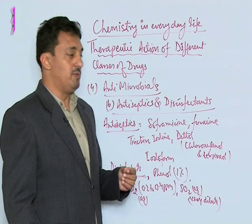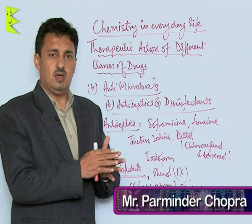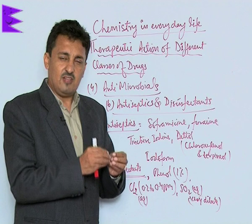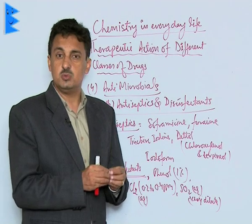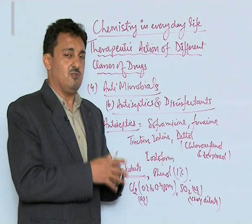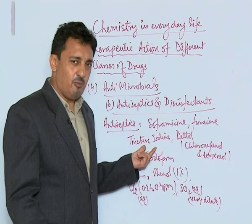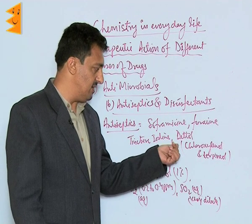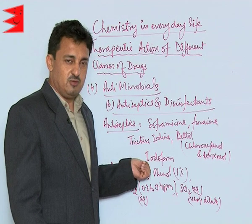The second category of antimicrobials are antiseptics and disinfectants. Antiseptics are chemical substances used to clean wounds and cuts. They are safe for human tissues and prevent or kill microorganisms on those cuts and wounds, thus preventing infection. Commonly used antiseptics are soframycin and furacin, used on the skin. Tincture iodine — a 2-3% iodine solution in alcohol — is also a very important antiseptic. The most commonly used is Dettol, used in households, which is a mixture of chloroxylenol and terpineol. Iodoform powder is also used as an antiseptic.